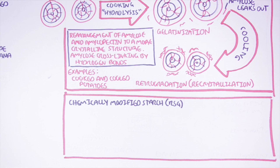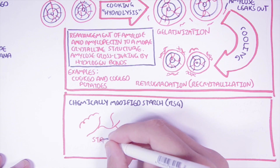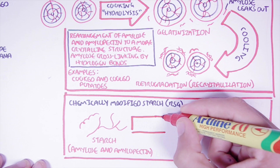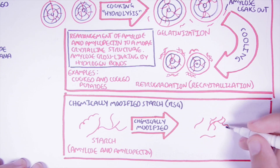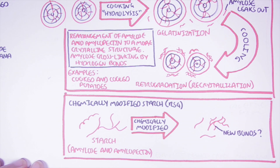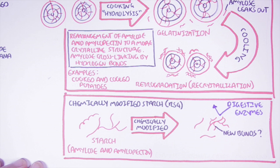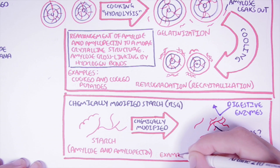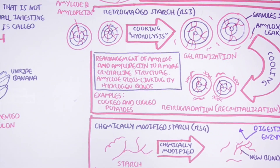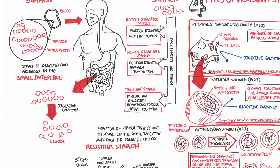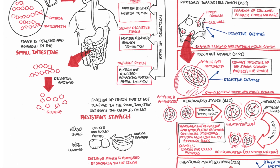Some authors have proposed a type 4 resistant starch — the chemically modified starch. This type is said to be resistant due to different bonds formed through chemical modification, and so with these new bonds this starch resists digestion by digestive enzymes. Examples of food with chemically modified starches are certain cakes and breads. And so that concludes the video on starch and resistant starch. Hope you enjoyed it — thank you for watching.